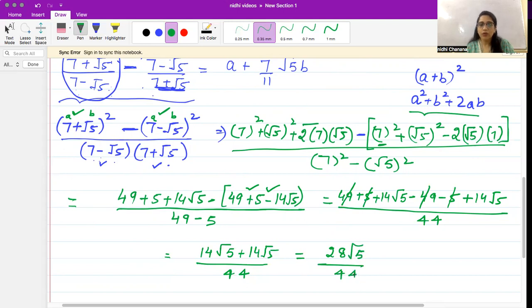Now you can cancel out 44 and 28. We can cancel this directly by 4 - this would be 11 and this would be 7. So the answer is 7/11 √5.